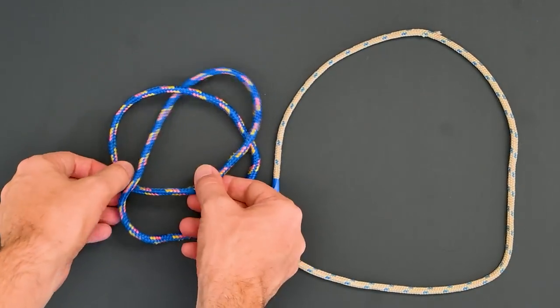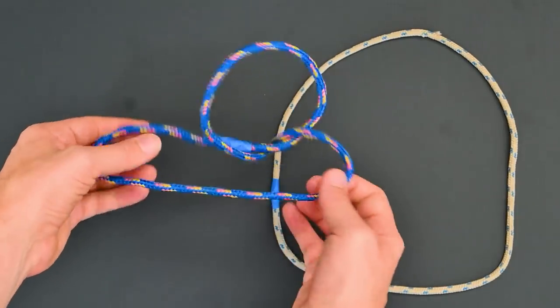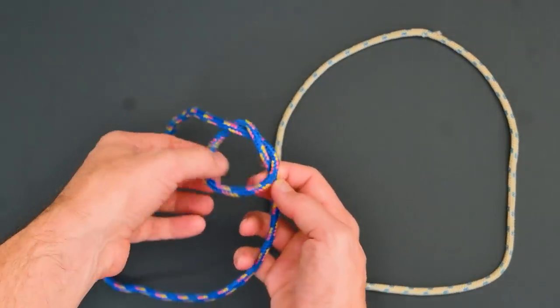But if I try and untangle the other, no matter what I do, I always end up with some knot remaining. This one is called the trefoil.